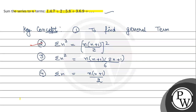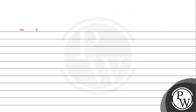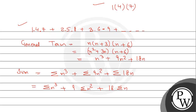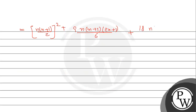Now applying the known results: Σn³ = [n(n+1)/2]², plus 9·Σn² = 9·n(n+1)(2n+1)/6, plus 18·Σn = 18·n(n+1)/2.